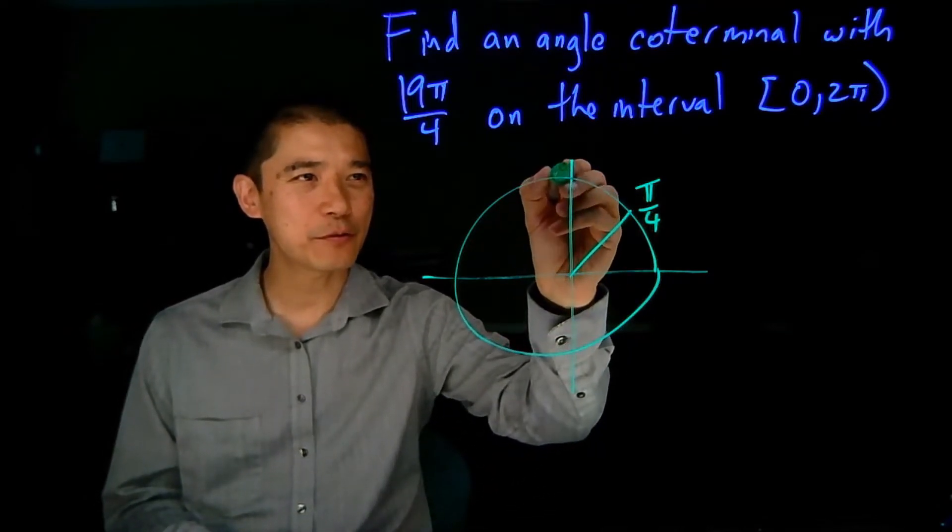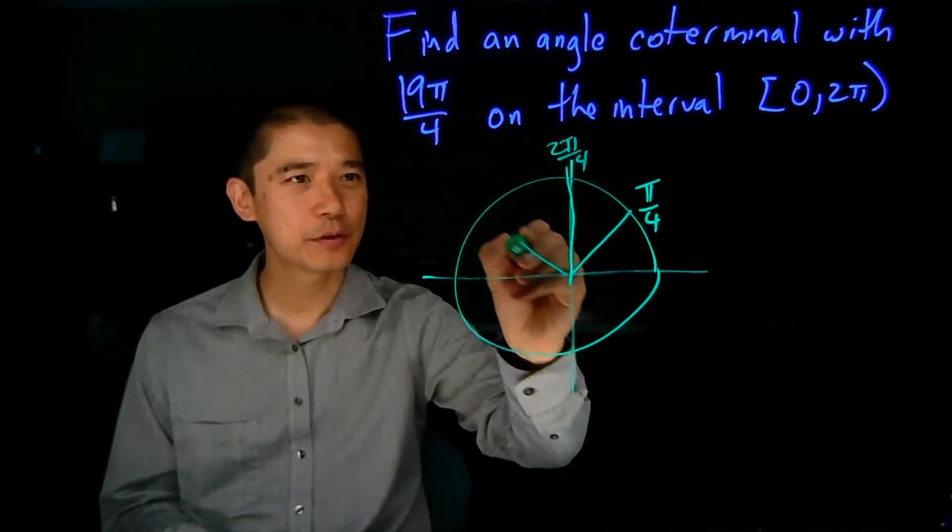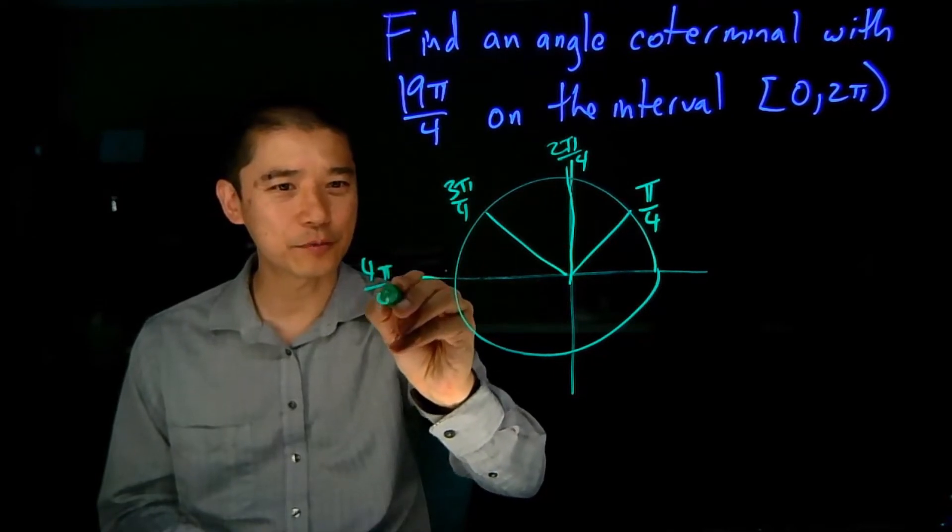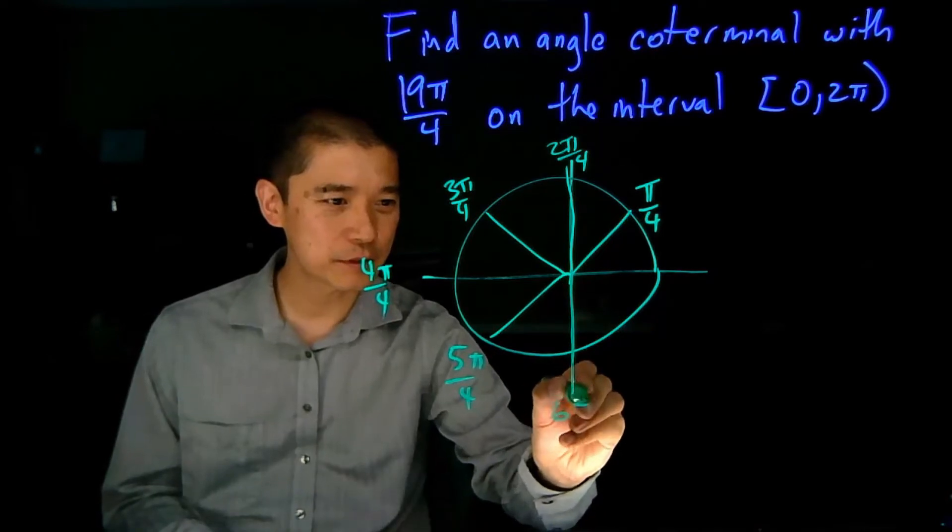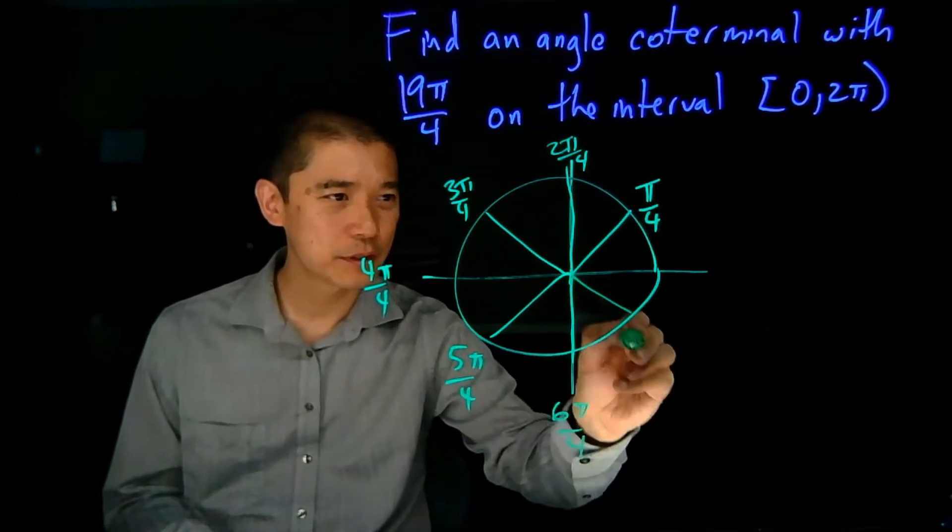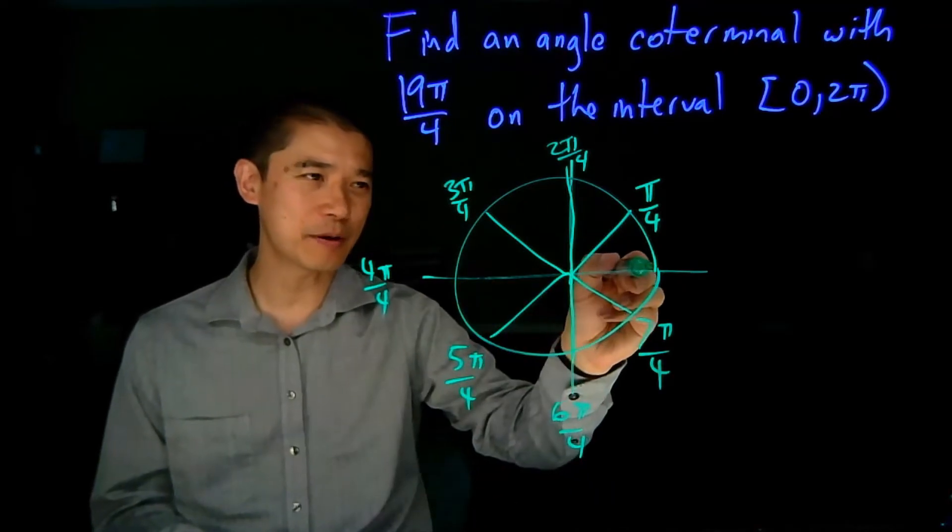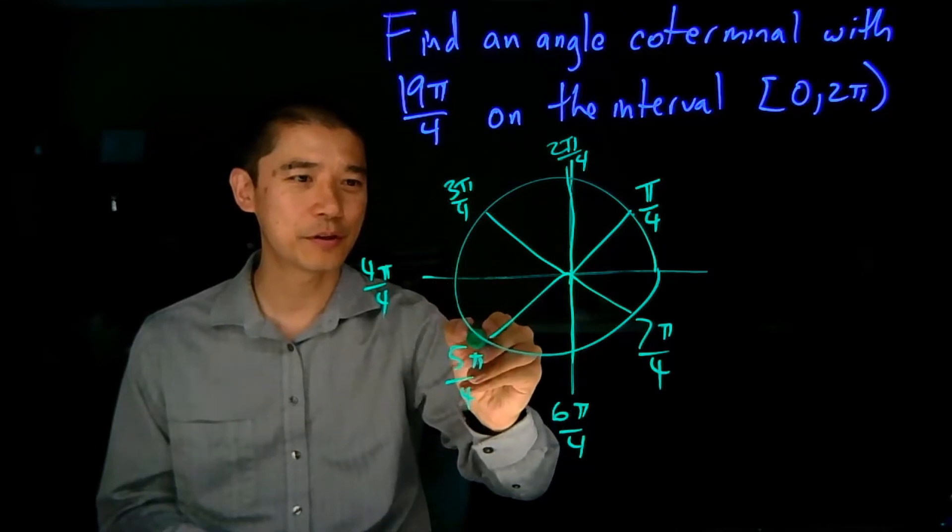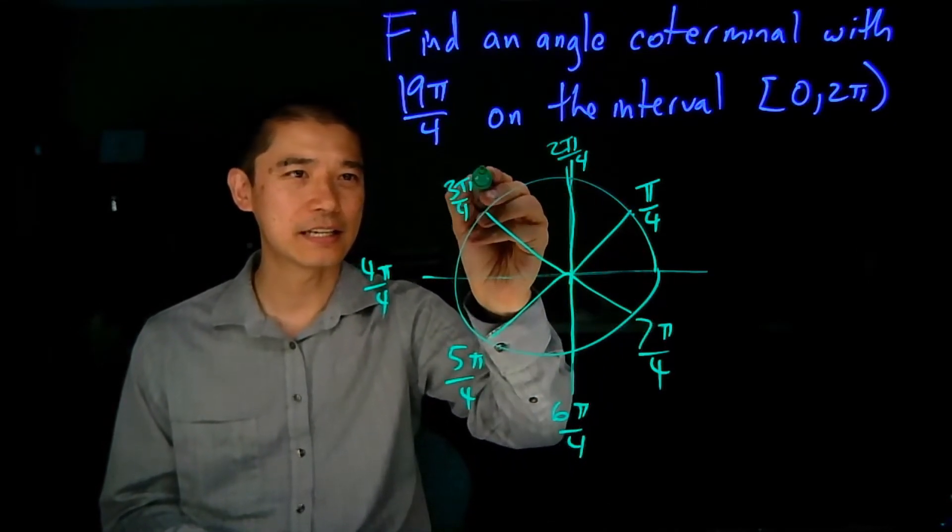So here's 1π over 4. This is going to be 2π over 4, 3π over 4, 4π over 4, 5π over 4, 6π over 4, 7π over 4, and this would be 8π over 4. I'm not going to keep on writing, I'm just going to keep counting: 9, 10, 11, 12, 13, 14, 15, 16, 17, 18, 19.